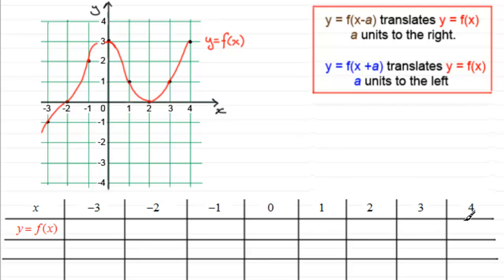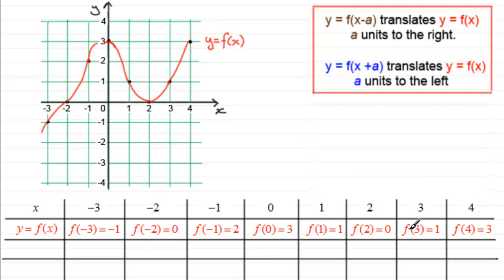Say we look at x equals 4. You can see that from the graph here when x equals 4 the corresponding y value is 3. So what we can say is that f of 4 equals 3. And if we took x to be 3, well we can see from the graph here that f of 3 would be 1. So if we mark that in, we've got f of 3 equals 1. To save time we could fill in all of these values — you might want to pause the video at this stage and write them in. Here they are, and they should correspond to these points along the graph.